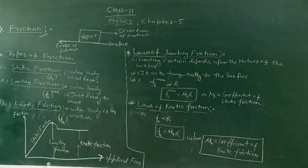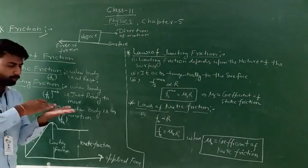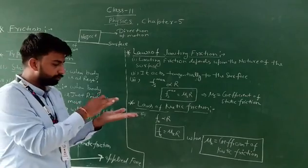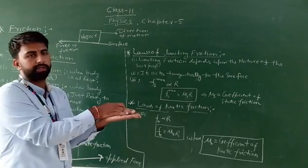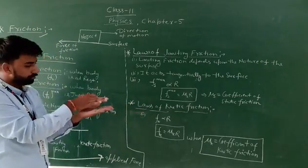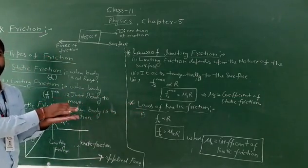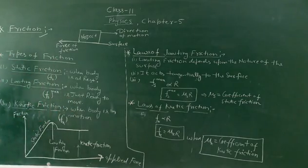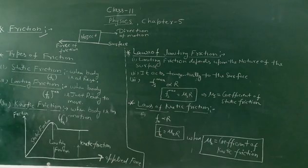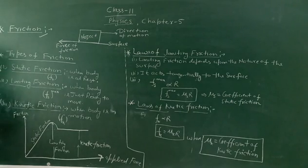When an object on some surface starts motion, the contact surface exerts a force that opposes the motion of the object. This force is known as friction force. Now, types of friction — the first type is static friction.